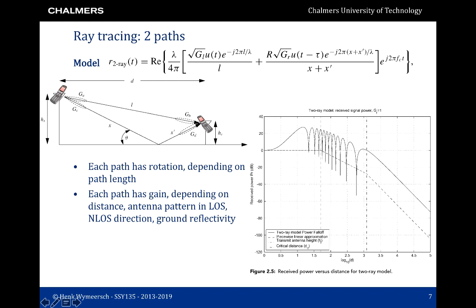When we have two paths between transmitter and receiver, things become a little bit more complicated. We again have rotations for each of the paths. There could be a short line-of-sight path between transmitter and receiver, and then a reflected path along the ground. The reflected path has a different delay, so it will have a different rotation.